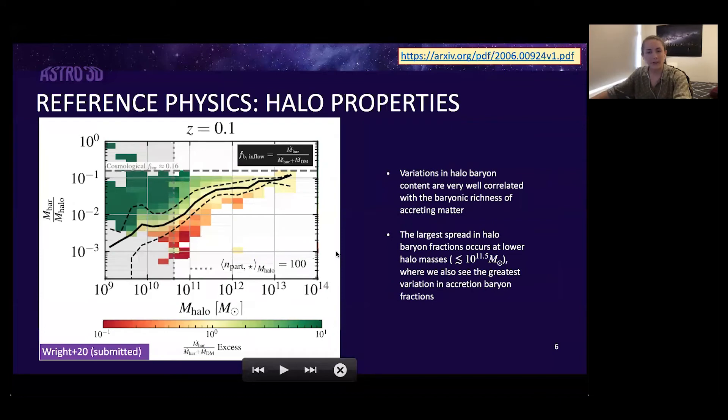If we've established that there are variations in the baryon enrichment of inflow, then the question we posed is how does this affect the properties of our halo population? On the slide you're looking at the median baryon fraction of halos as a function of their halo mass, with the parameter space colored by the inflow baryon fraction excess in that bin. That's basically how baryon rich the inflow is compared to what we would expect on average in that halo mass bin.